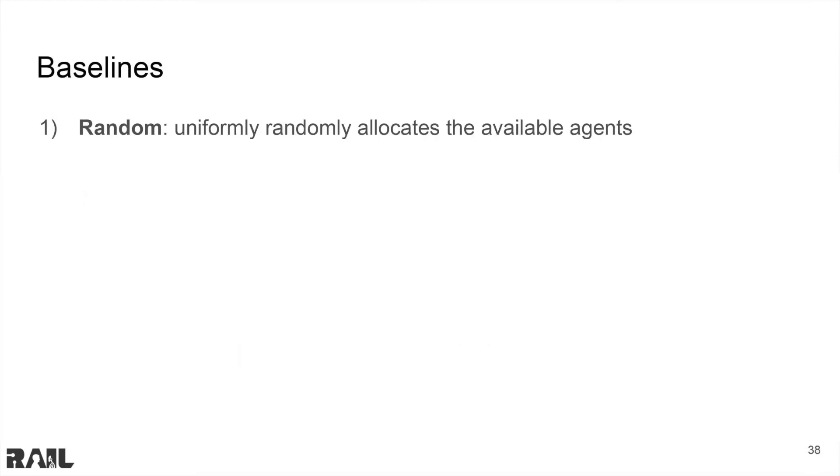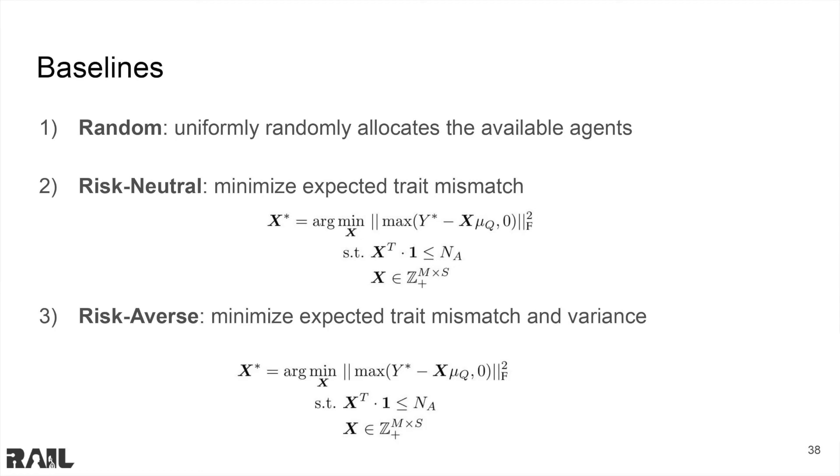We use three baselines against which we compare our method. The first is a random baseline where agents are uniformly and randomly allocated to tasks. The second is a risk-neutral baseline which aims to maximize the expected value of the task-trait matrix, Y.